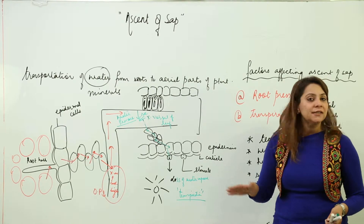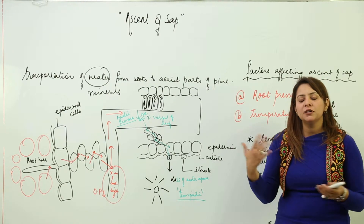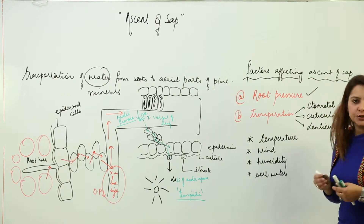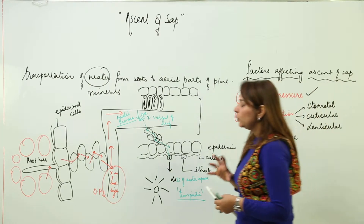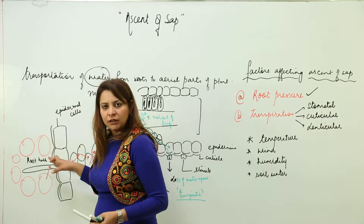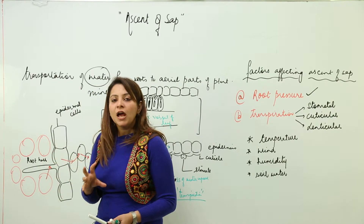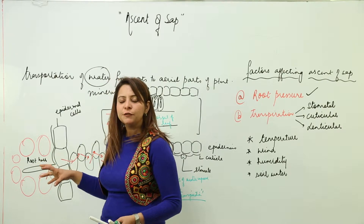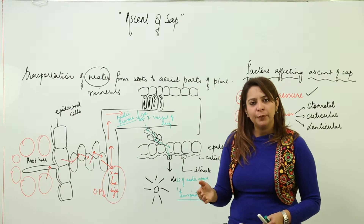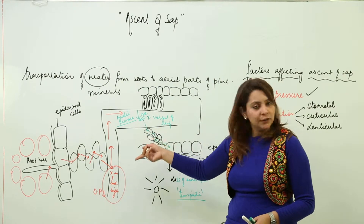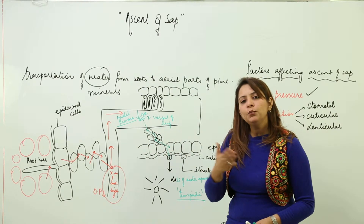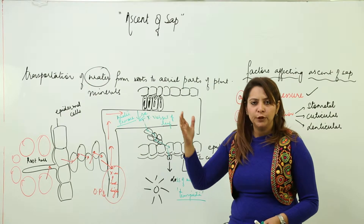The first factor that affects the ascent of sap is root pressure. Root pressure is created by the continuous movement of water from the soil into the roots. This creates a pressure that is responsible for the upward movement of sap from the roots to the aerial parts of the plant. More root pressure means more upward movement of sap along with water.